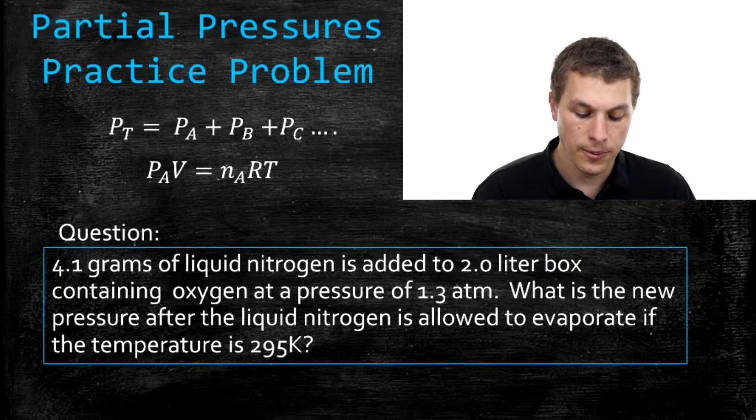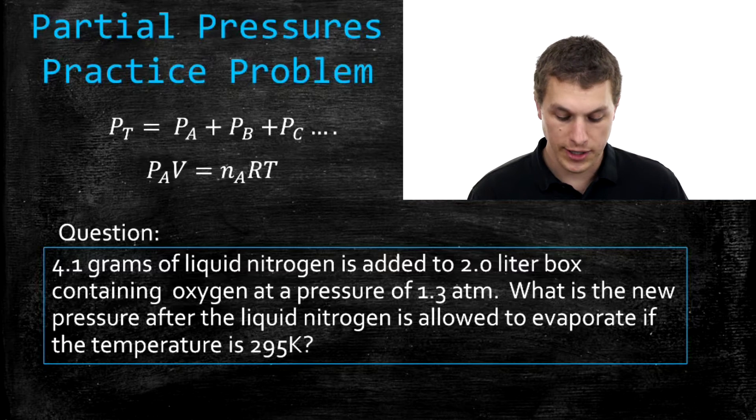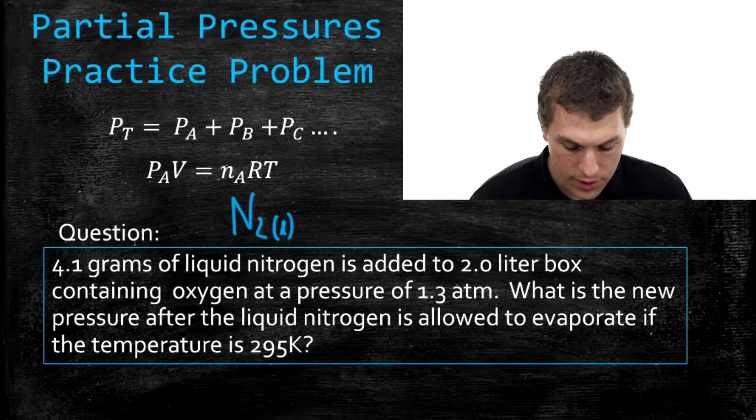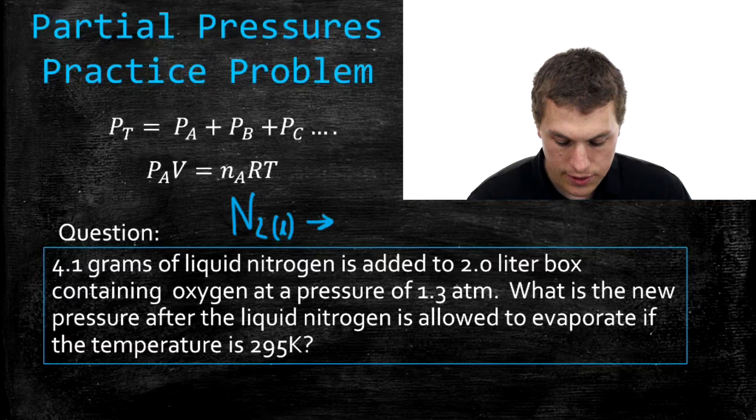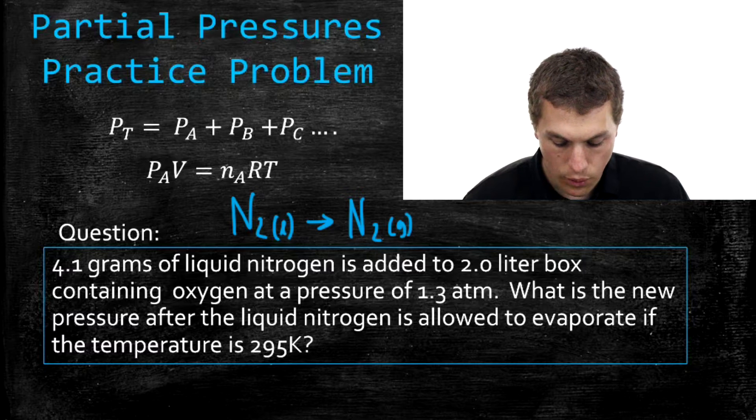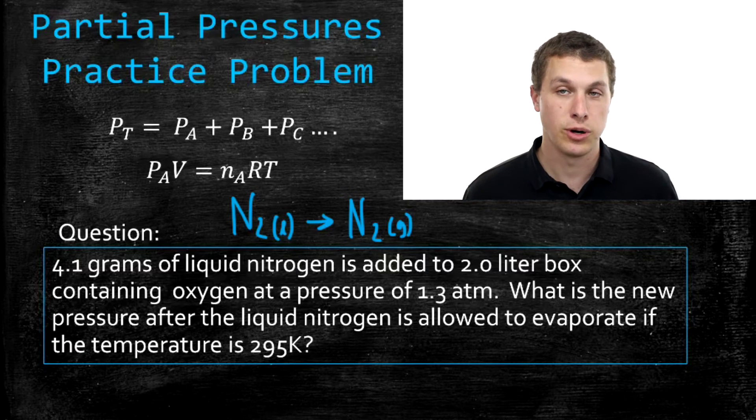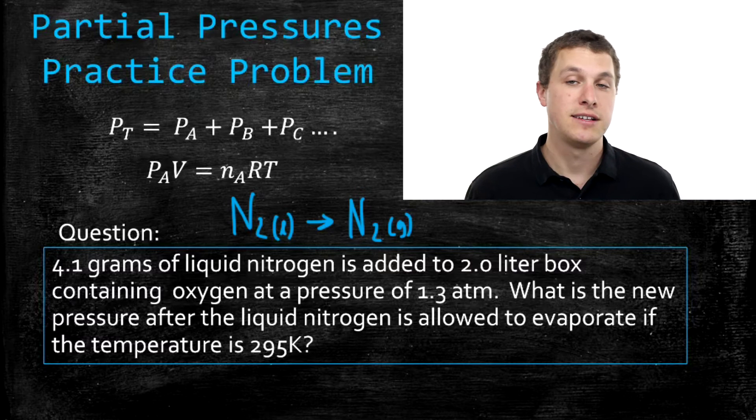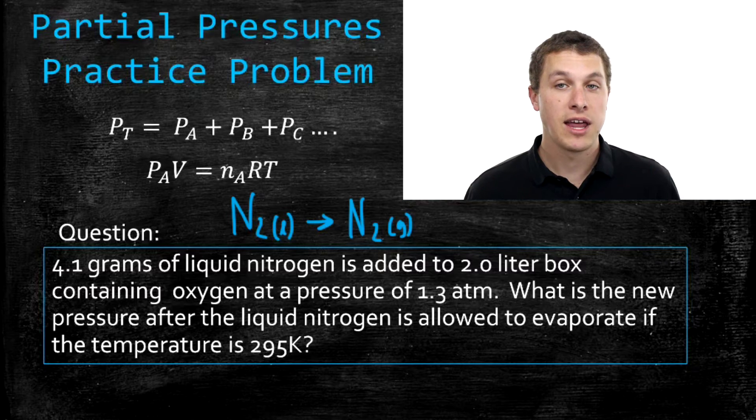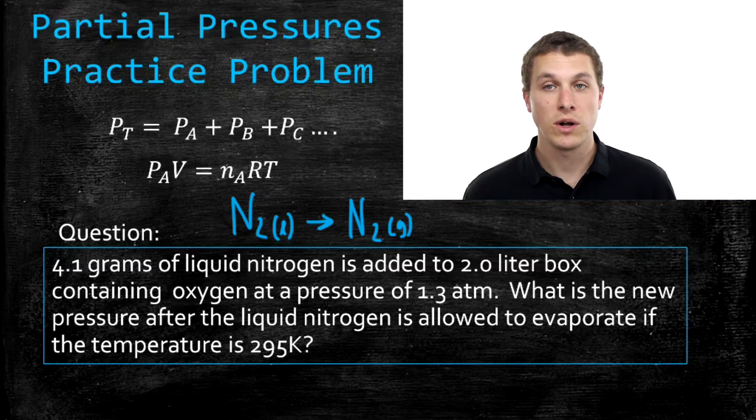One key thing to get here is that what's going on is we're adding liquid nitrogen. So that's N2 that's in the liquid phase and it's going to N2 in the gas phase. So it's evaporating, it's going from a liquid to a gas and that's going to add pressure to our box. So we have a box that contains just oxygen initially, we add some liquid nitrogen to it, and when that evaporates that's going to increase the pressure. And what we're trying to figure out in this problem is what's that new pressure?